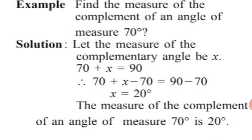Let us look at an example of how to solve these sums. Find the measure of the complement of an angle of measure 70 degrees. One angle is 70 degrees; we assume the other as x. We know that 70 plus x equals 90 degrees. Let the measure of the complementary angle be x. We form the equation: 70 plus x equals 90. Since they are complementary angles, the addition will equal 90.